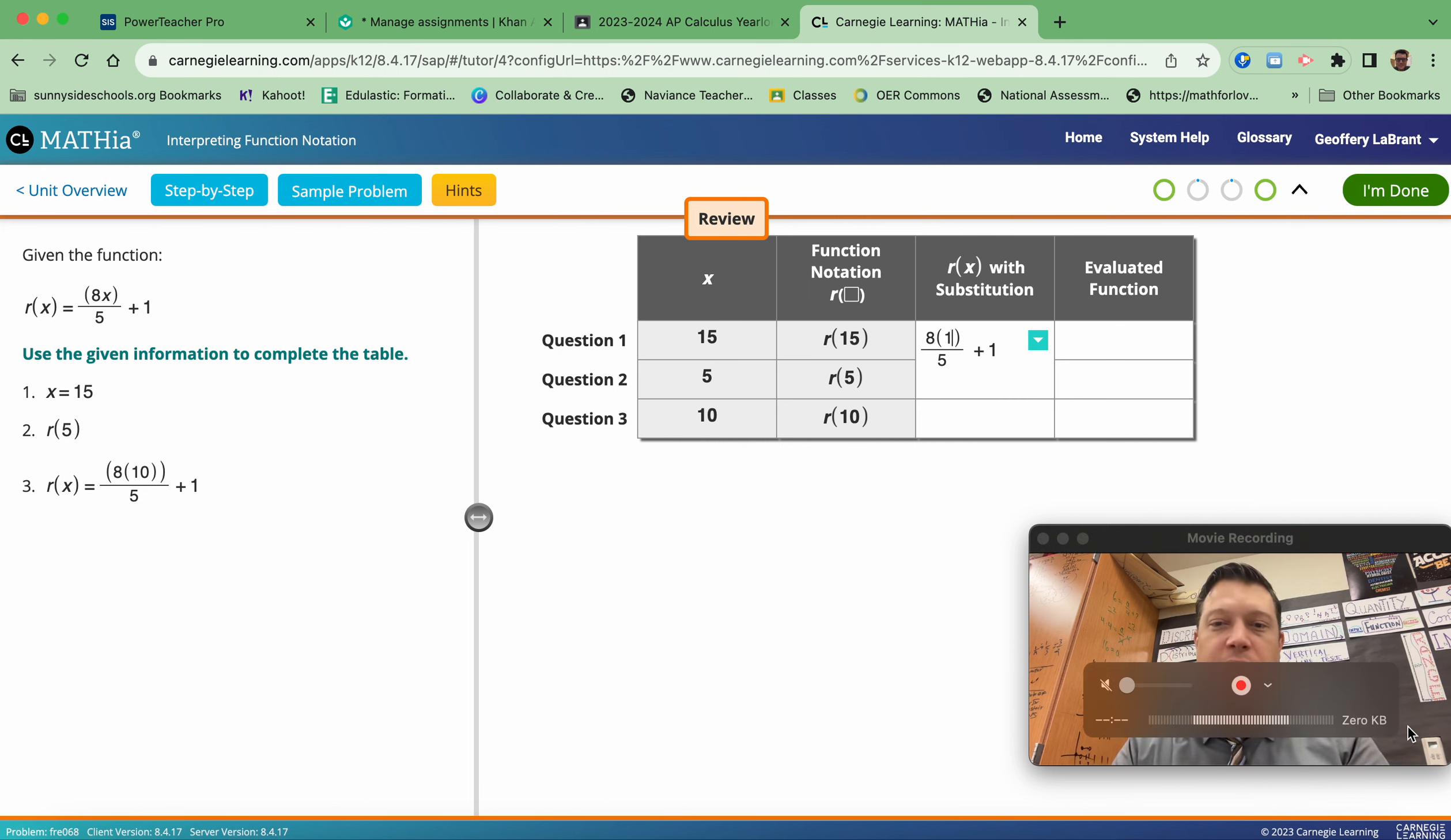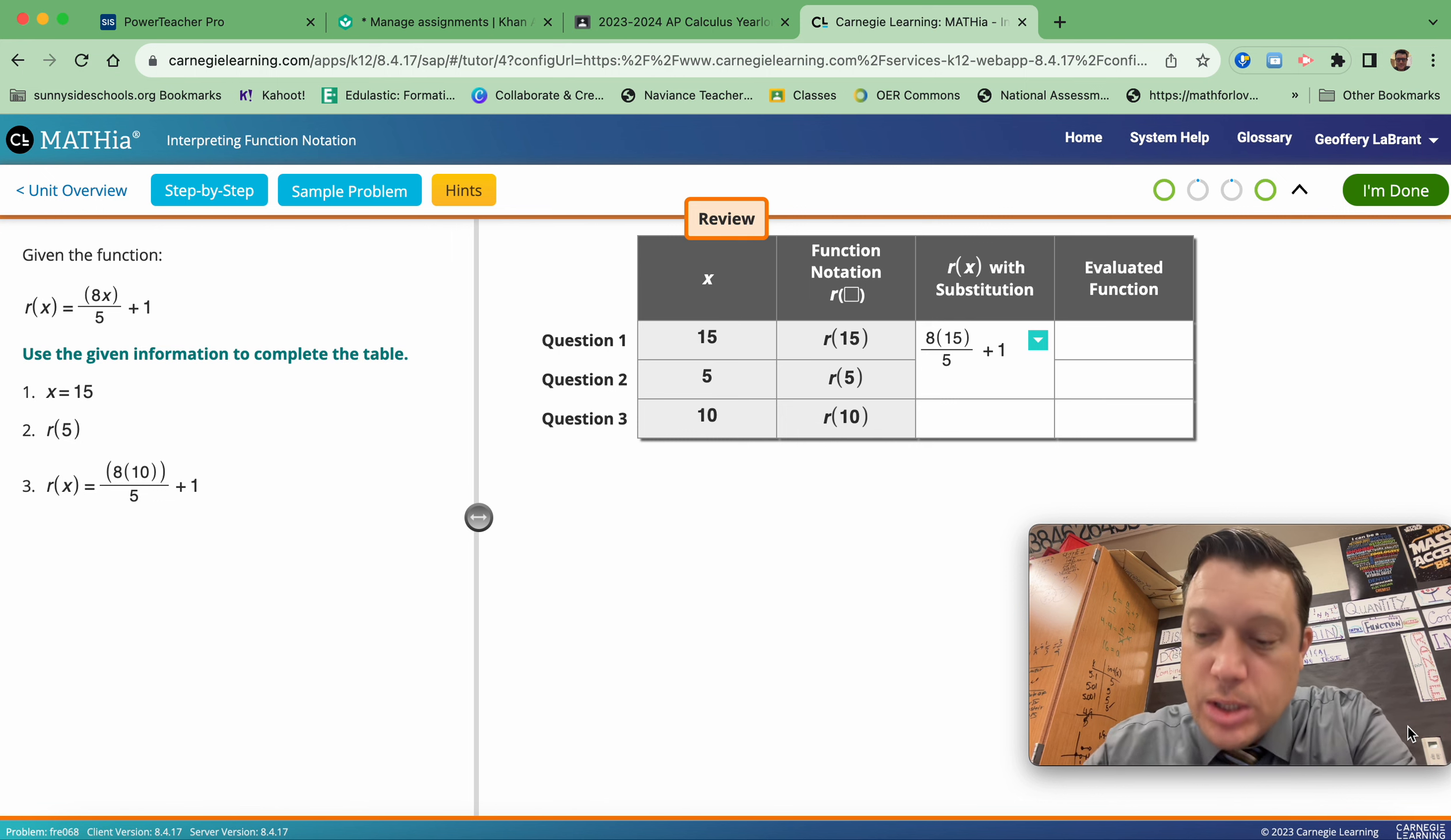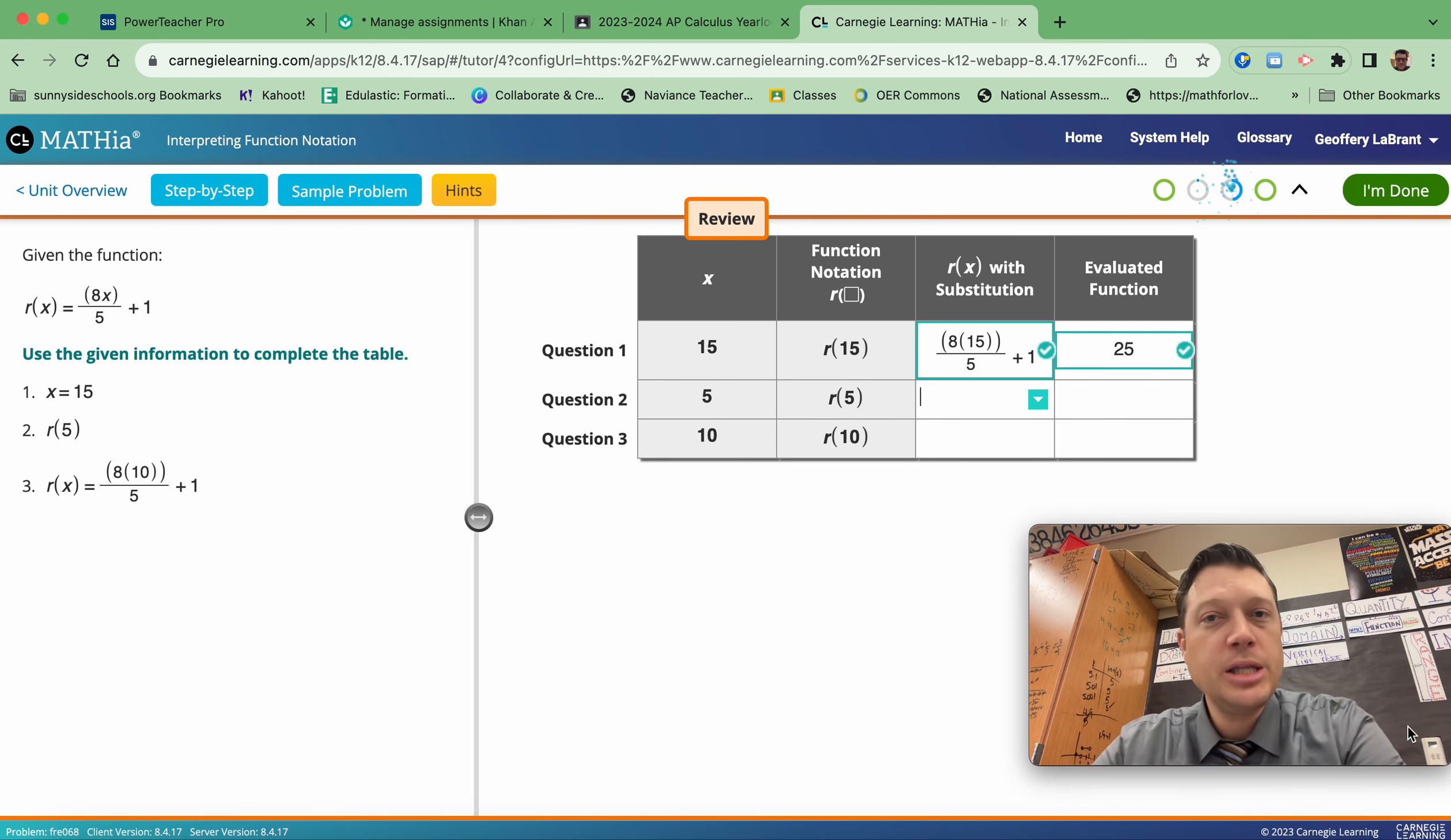So I'm going to take the X out and I'm going to put what it equals for row 1 in that spot. Lock it in. The answer is 25.